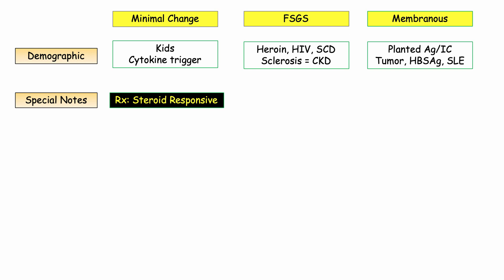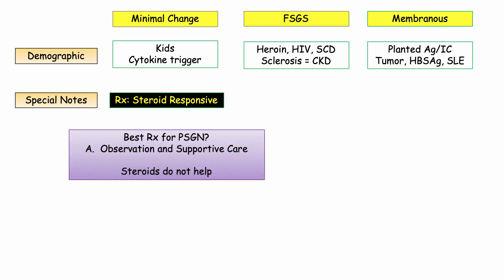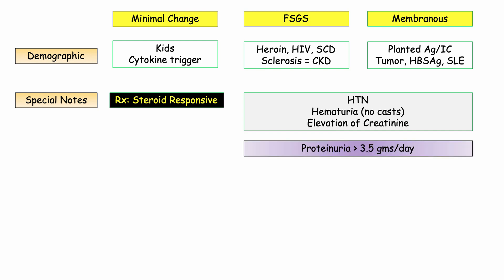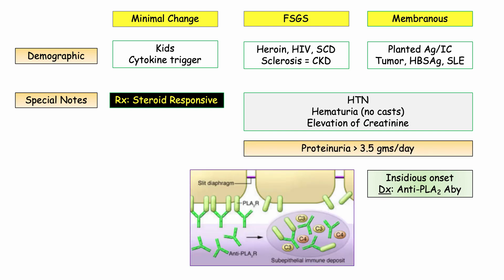A few miscellaneous tidbits: of all the glomerulopathies, the only treatment you need to know is glucocorticoids for minimal change. If asked about management in a kid with nephrotic syndrome, the answer is steroids. By contrast, for post-streptococcal glomerulonephritis in a child, the answer is supportive treatment and observation — steroids don't help. Whereas a patient with minimal change will have none of the following, focal segmental and membranous may present with hypertension, hematuria, and/or elevated creatinine. Finally, recall that membranous is a disease of insidious onset and may be diagnosed with detection of circulating anti-phospholipase A2 antibodies.